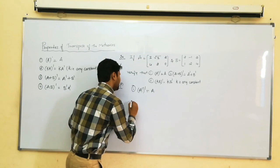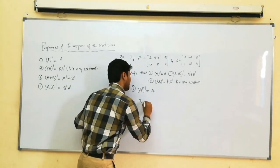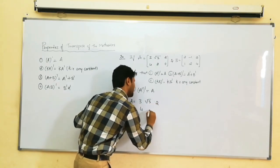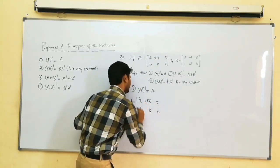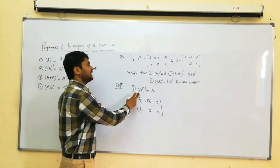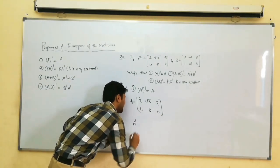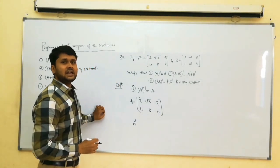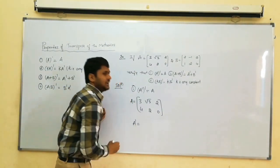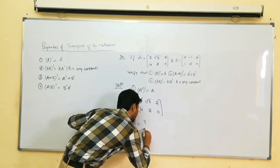Write matrix A. What is matrix A? Write down: 3, root 3, 2 in the first row and 4, 2, 0 in the second row. This is the given matrix A. We have to write the transpose of A first. A transpose, or A dash, is equal to: writing 3, root 3 in the first column.